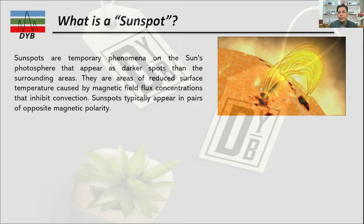On the right side figure you can see the surface of the sun — the photosphere — and you can see the darker portions. These darker portions are areas of reduced surface temperature caused by magnetic flux concentration, which inhibits convection.